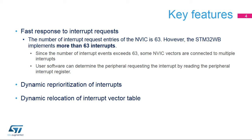The STM32WB implements more than 63 interrupts. Some interrupts are combined on the same Nested Vector Interrupt Controller vector. By reading the peripheral interrupt register, the software can determine the peripheral that requested the interrupt. The priority assigned to each interrupt request is programmable and can be dynamically changed. The interrupt vector table can also be relocated, which allows the system designer to adapt the placement of interrupt service routines to the application's memory layout. For instance, the vector table can be relocated in RAM.